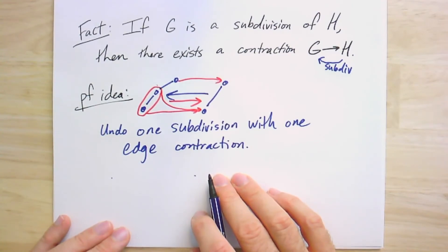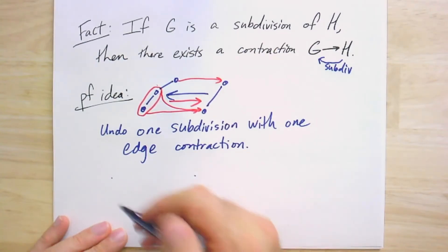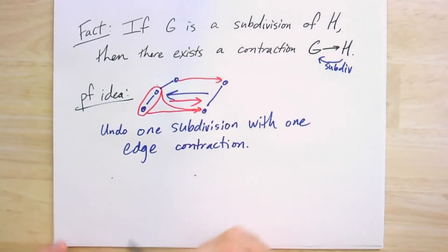And now since we know that the composition of contractions is a contraction, we just compose all those contractions for each of the edge subdivisions. So I will leave the details to you.